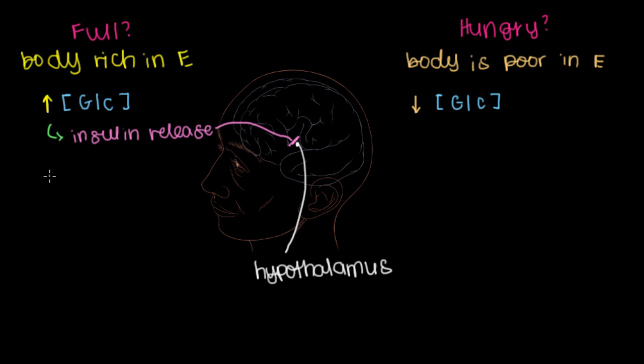Now what if we ate a really fatty meal and we have high levels of lipids or fat in our bloodstream? Something really greasy. Well that'll cause the release of a hormone called leptin. Leptin is similar to insulin in that it represents the presence of energy rich nutrients in the bloodstream. So it'll go to the hypothalamus and bind receptors there to inhibit the feeling of hunger.